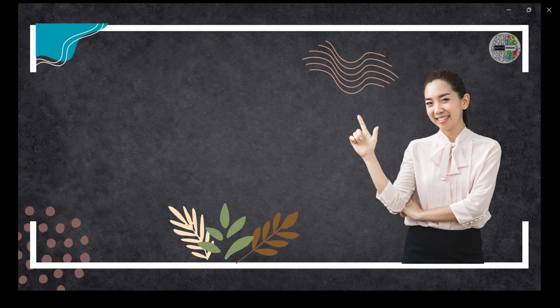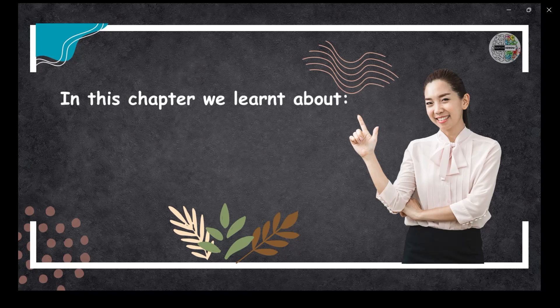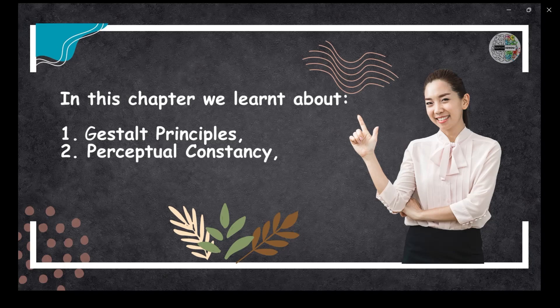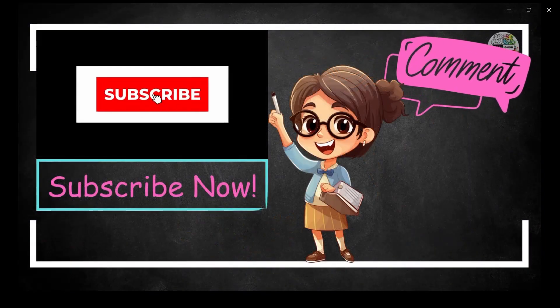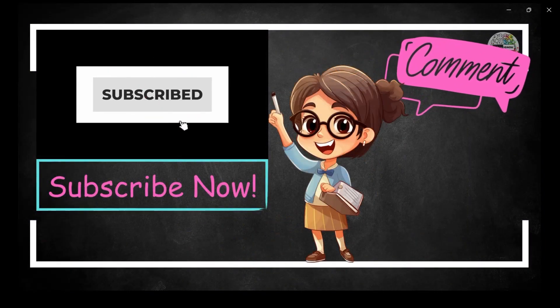Overall, these factors together shape how you see and understand the world around you — they're like the different ingredients that make up your perception. With this we have completed another unit from BPCC 101! We learned about Gestalt principles, perceptual constancy, and factors affecting perception.